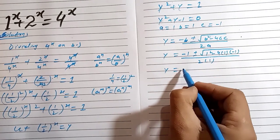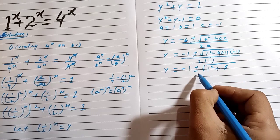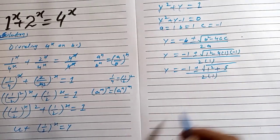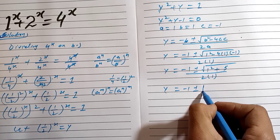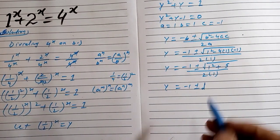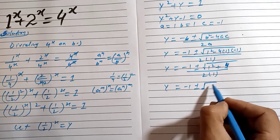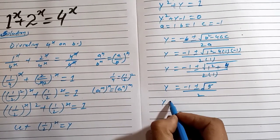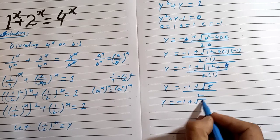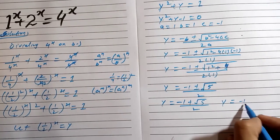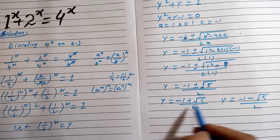Simplifying: Y = (-1 ± √(1 + 4)) / 2, which gives Y = (-1 ± √5) / 2. So we have two values: Y = (-1 + √5) / 2 and Y = (-1 - √5) / 2.